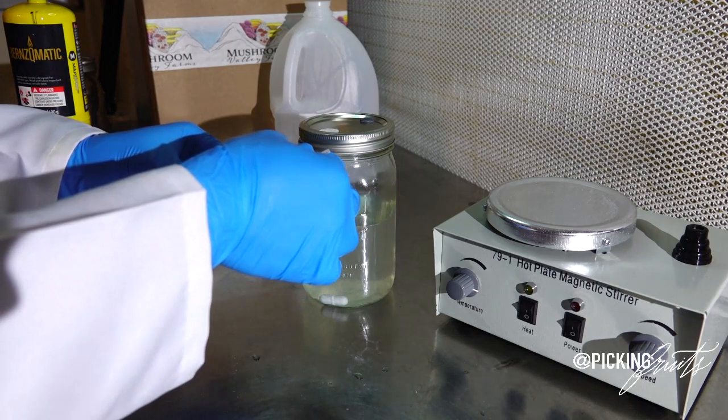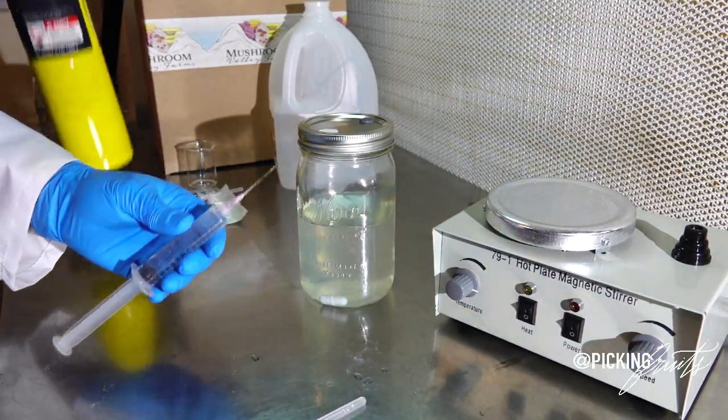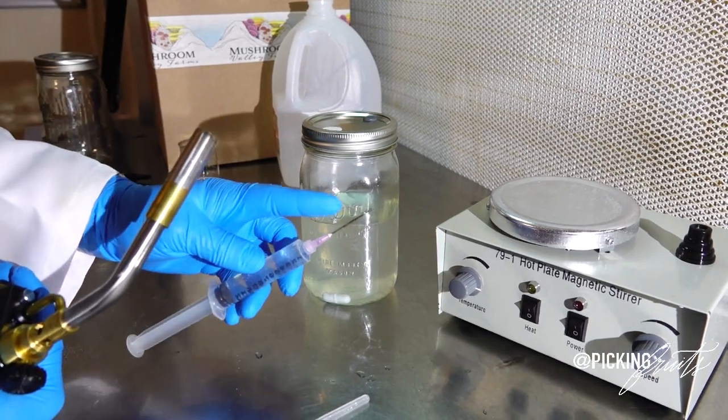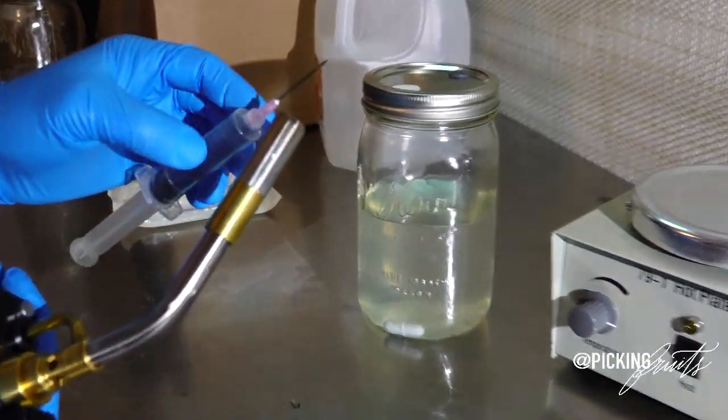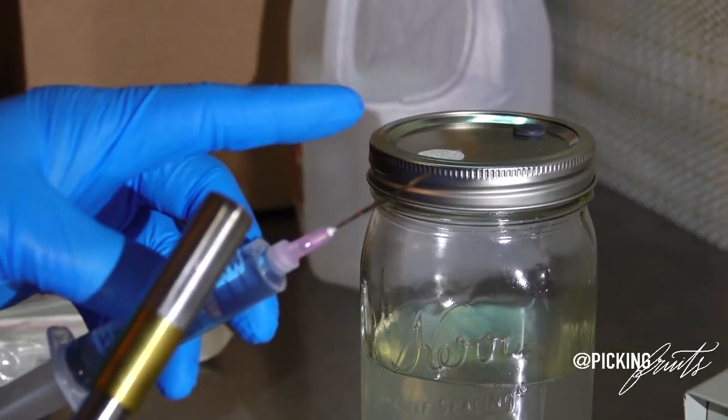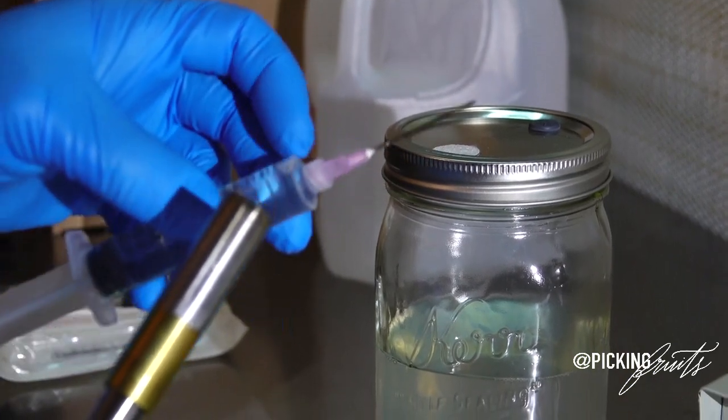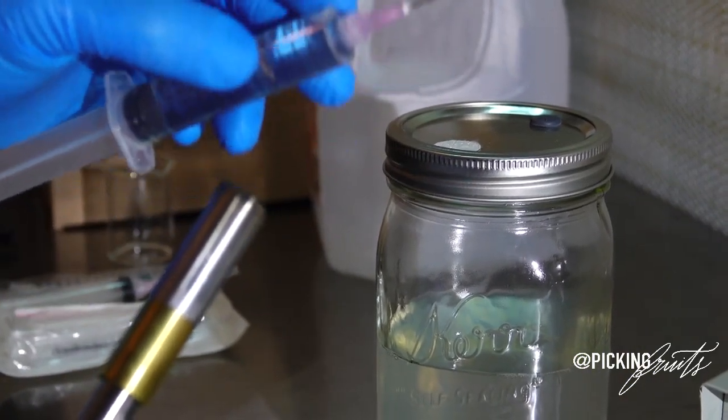So the first thing that you're going to want to do is after you've placed your needle onto your syringe is you're going to want to sterilize it. So the way that we're going to sterilize our needle is by taking a flame to it and getting it red hot. We're going to get it red hot for two seconds. At that point, we're going to cut the flame and then we're going to cool it down with the liquid inside of the syringe.